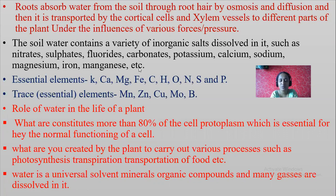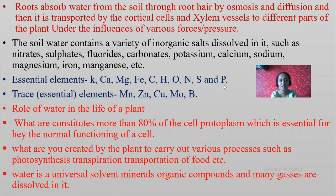Plants will get both water as well as mineral salts. What are essential elements? Essential elements are the elements required by plants — without which plants cannot grow and there will be a deficiency. Those are: potassium, calcium, magnesium, iron, carbon, hydrogen, oxygen, nitrogen, sulfur and phosphorus.